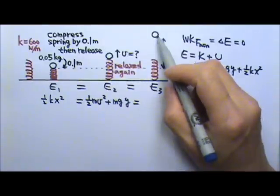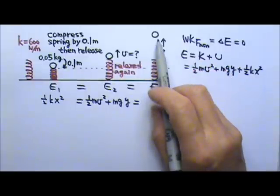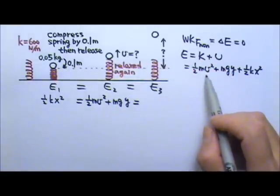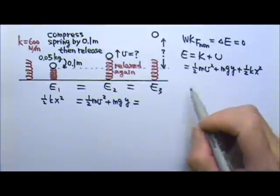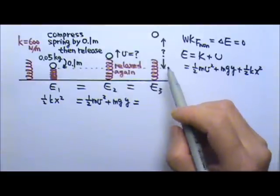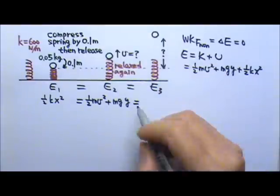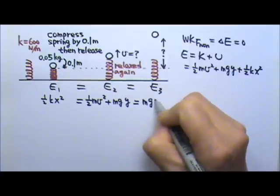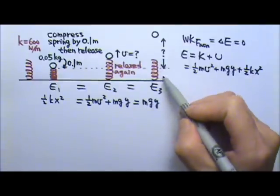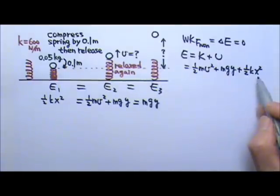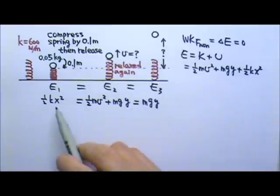At the maximum height, it's a turning point, so the speed of the ball is 0. There is no kinetic energy. It is up high, so there is mgy. Again, the spring is still relaxed, no 1/2 kx squared. So that's what we have.